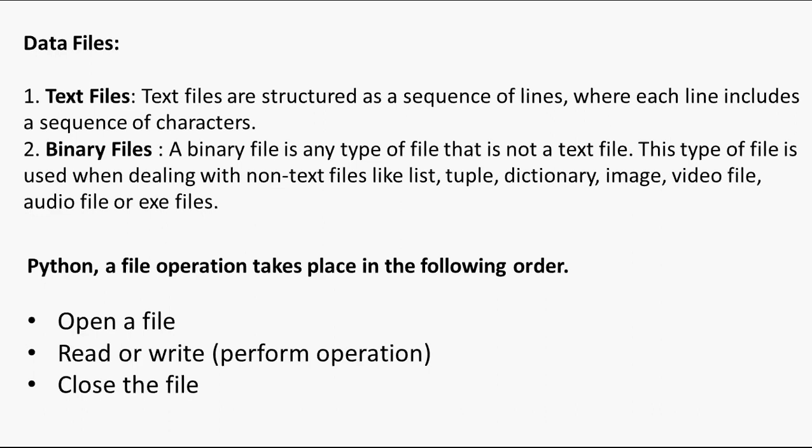The second type is a binary file. A binary file is a type of file that is not a text file. This type of file is used when dealing with non-text data like lists, tuples, or dictionaries, because these three things may have any type of data in them — not necessarily textual. Image, video, audio, exe files, and other types of files other than text files are dealt with using binary files.